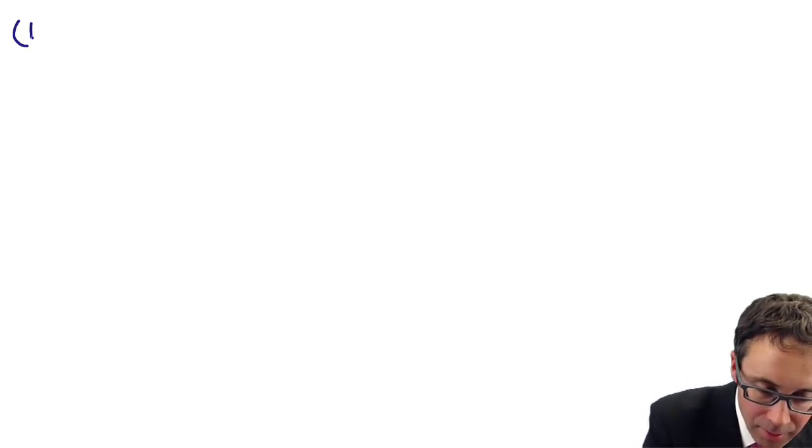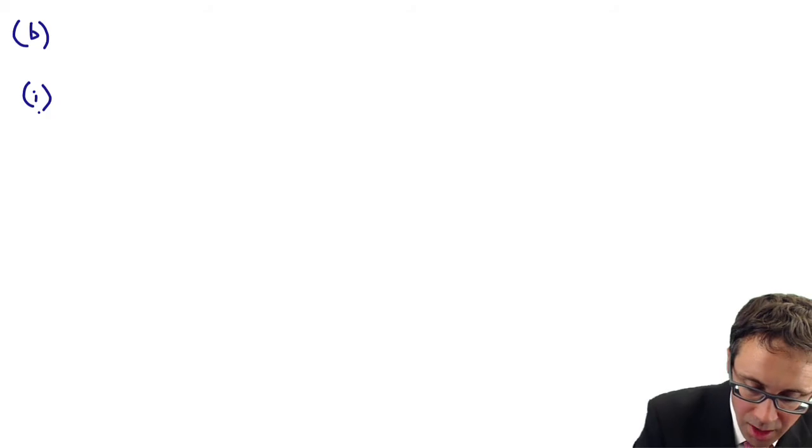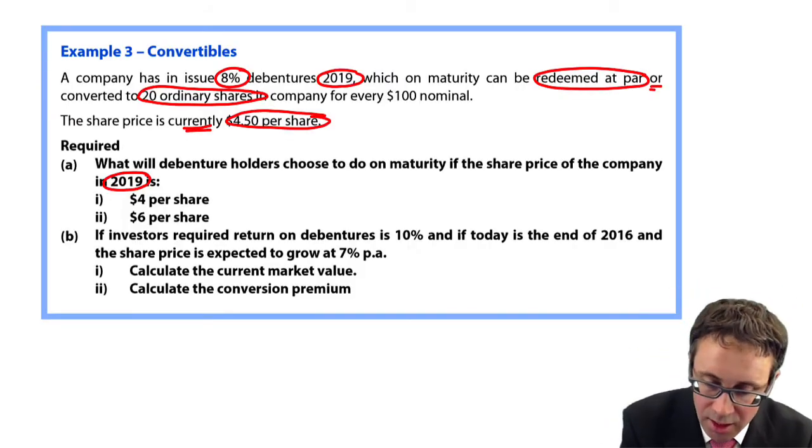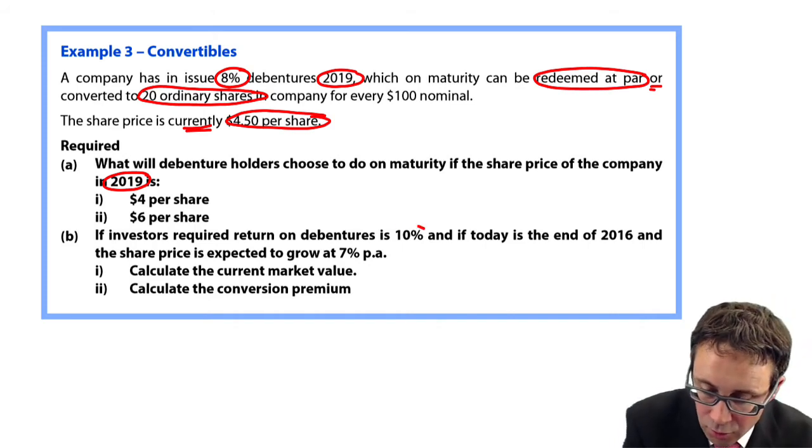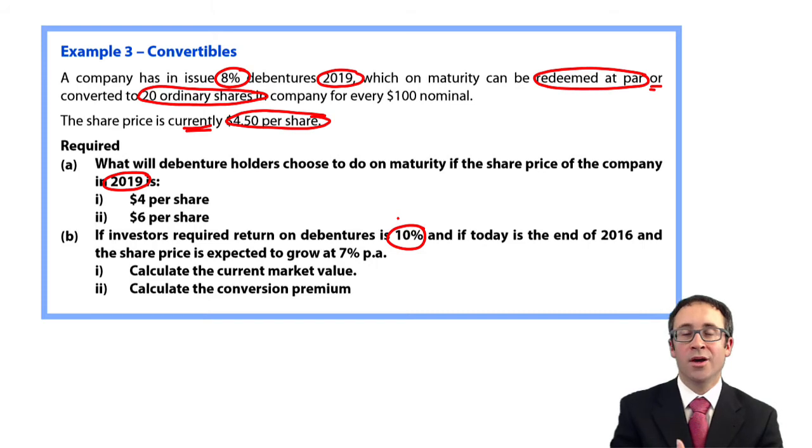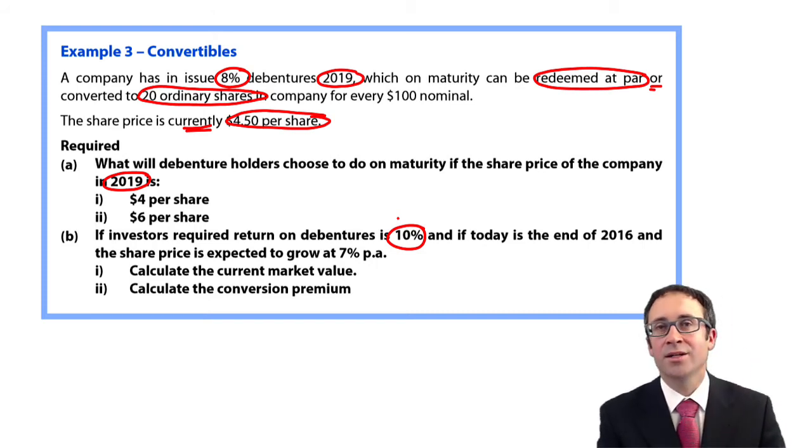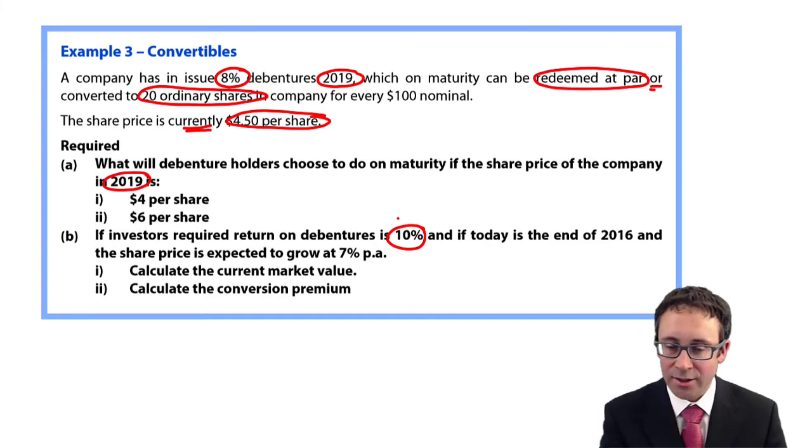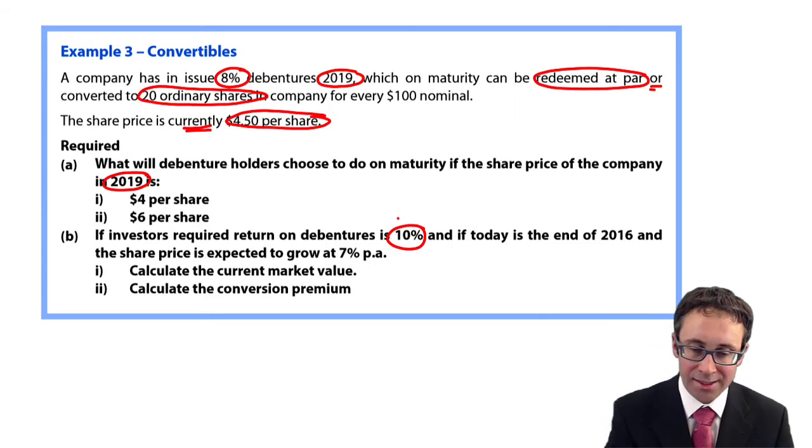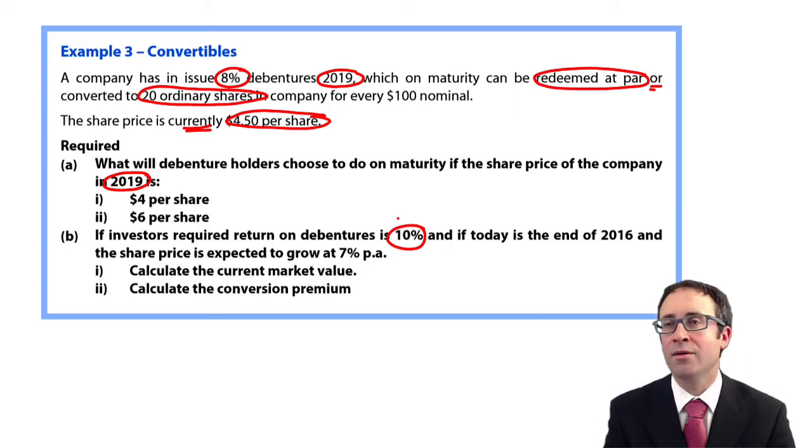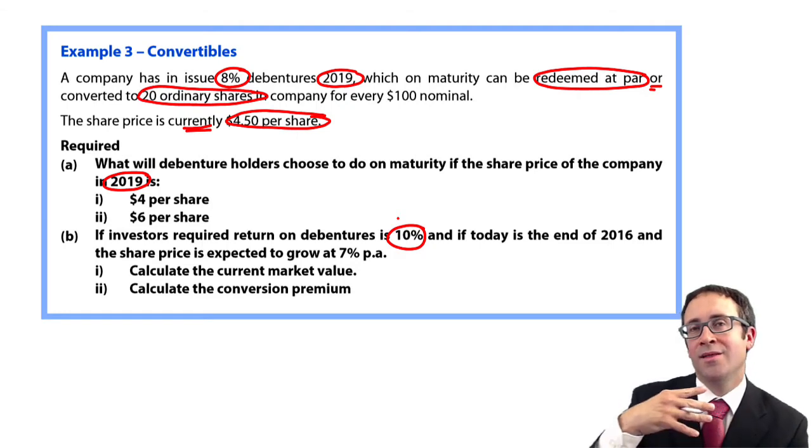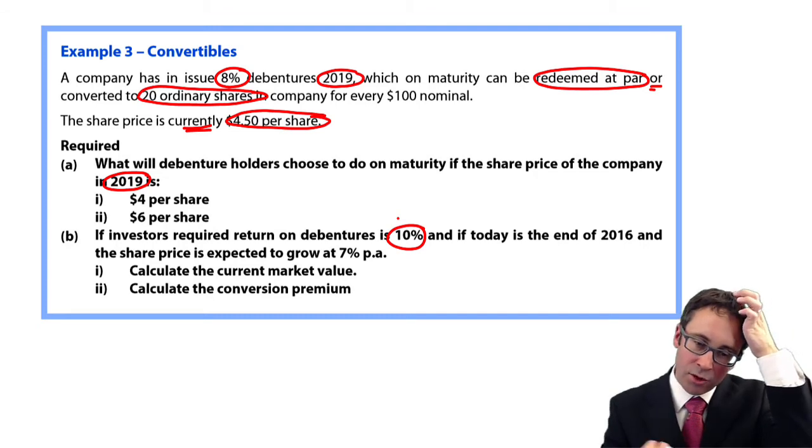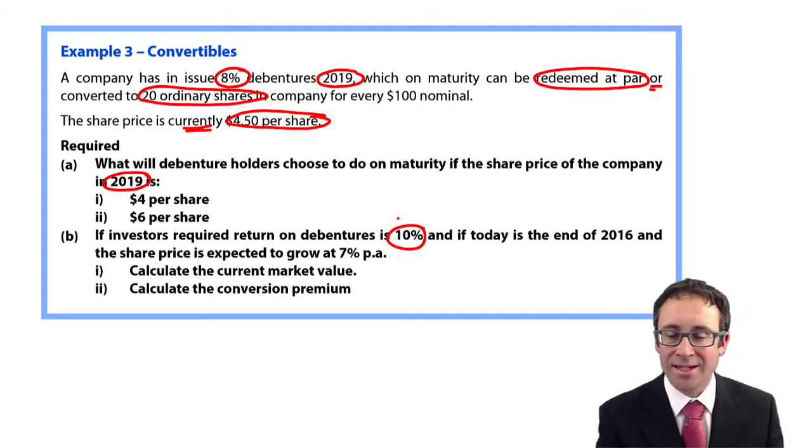Part B, this is where it gets funky. The investors require return on debentures of 10%, so that's your gross return, your yield to maturity. So that's the required rate of return at 10%.